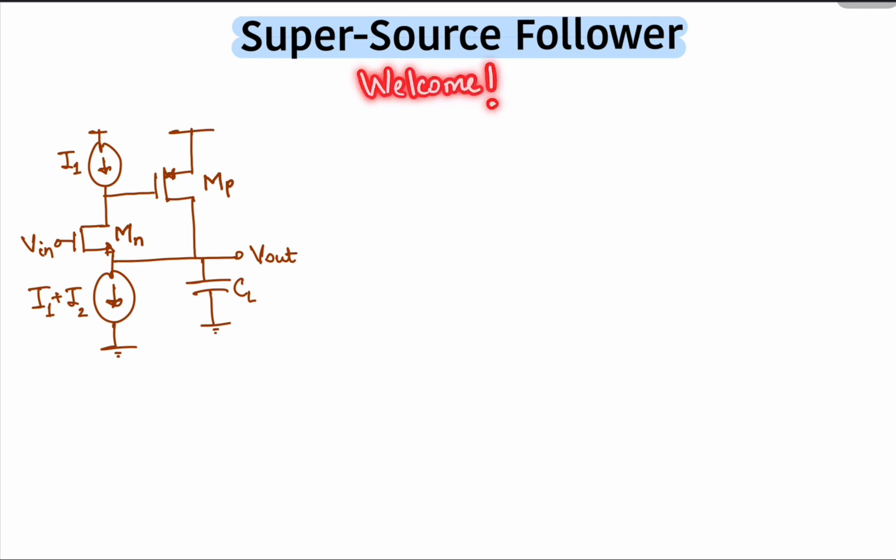In today's video, we'll look at a variant which has a higher short circuit transconductance, a reduced output impedance, while achieving a similar gain as that of a simple source follower. The circuit is called a super source follower.